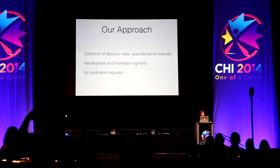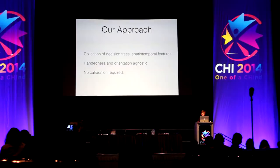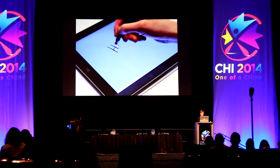Rather than using heuristics, our approach leverages a collection of machine learning models trained on features that describe how a given touch and the points around it change over time. The advantage of this is that it's agnostic to handedness and device orientation and doesn't require any sort of special calibration.